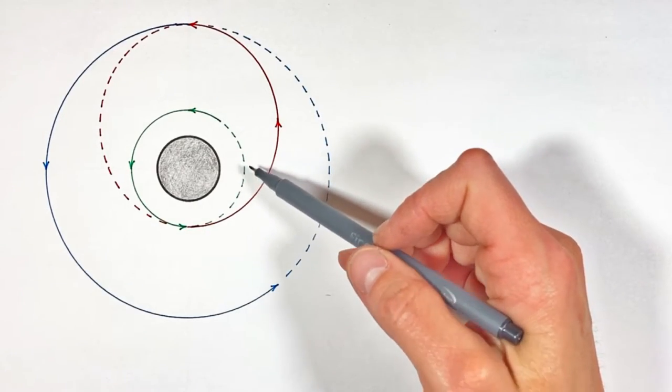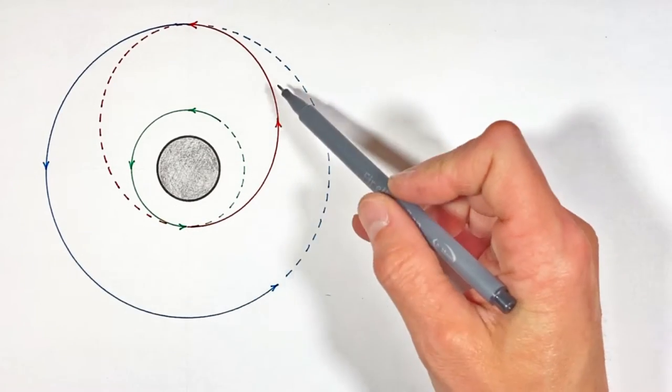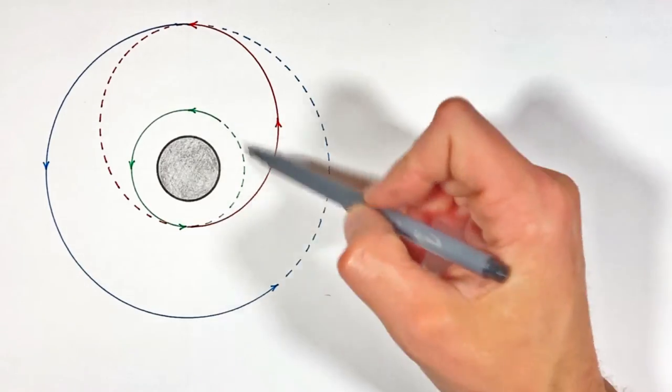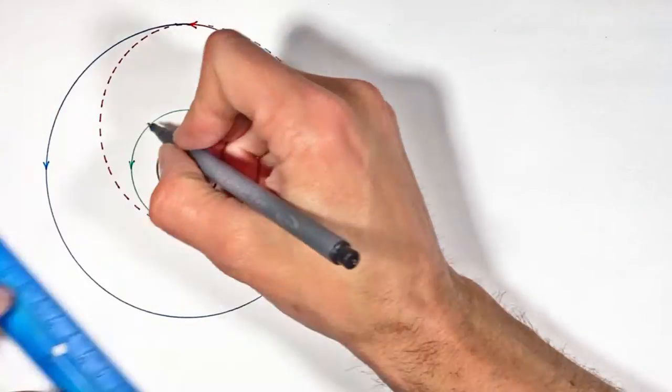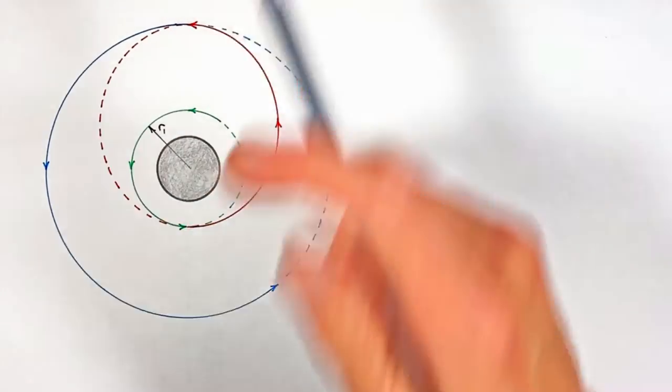All right YouTube, we're back talking about Hohmann transfers, which is a maneuver where we transfer a satellite in a circular orbit of one radius to a circular orbit of some other radius.